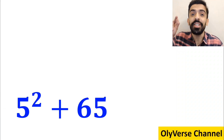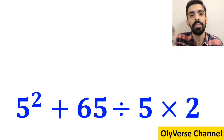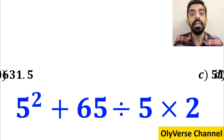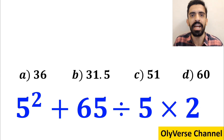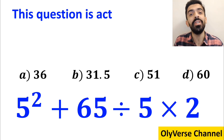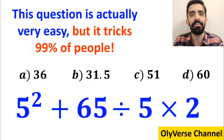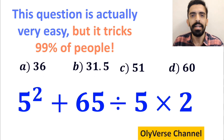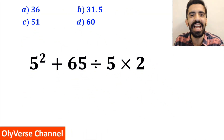What is the value of the expression 5 squared plus 65 divided by 5 times 2? Which option do you think is the correct answer to this question? This expression is actually very easy but it tricks 99% of people. Let's break it down and solve it together.